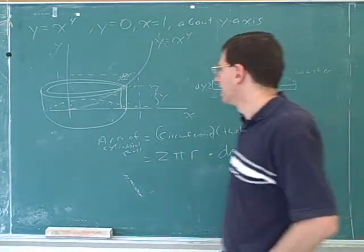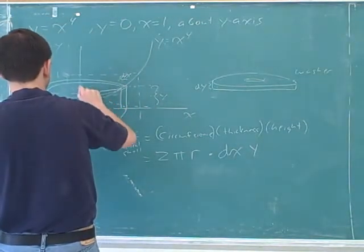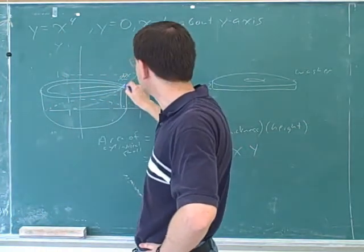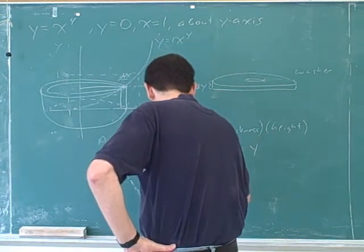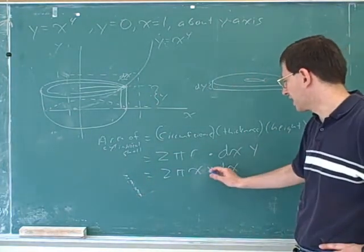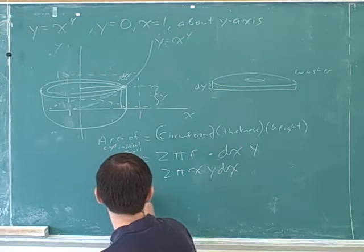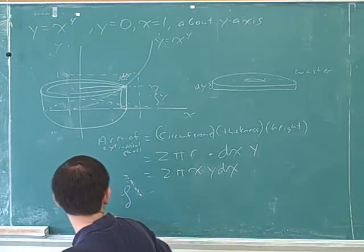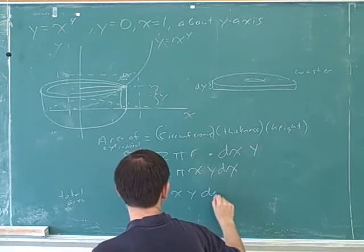And what's our radius? I didn't draw this very symmetrically. The radius is this distance, which is just x. You can see from this picture that the radius of the cylindrical shell is just x. So this should be pretty much the formula they have in the book: 2πx times y times dx. And then we want to add together all the different cylindrical shells that we can get from all the rectangular strips. So the total area is going to be 2πxy dx.